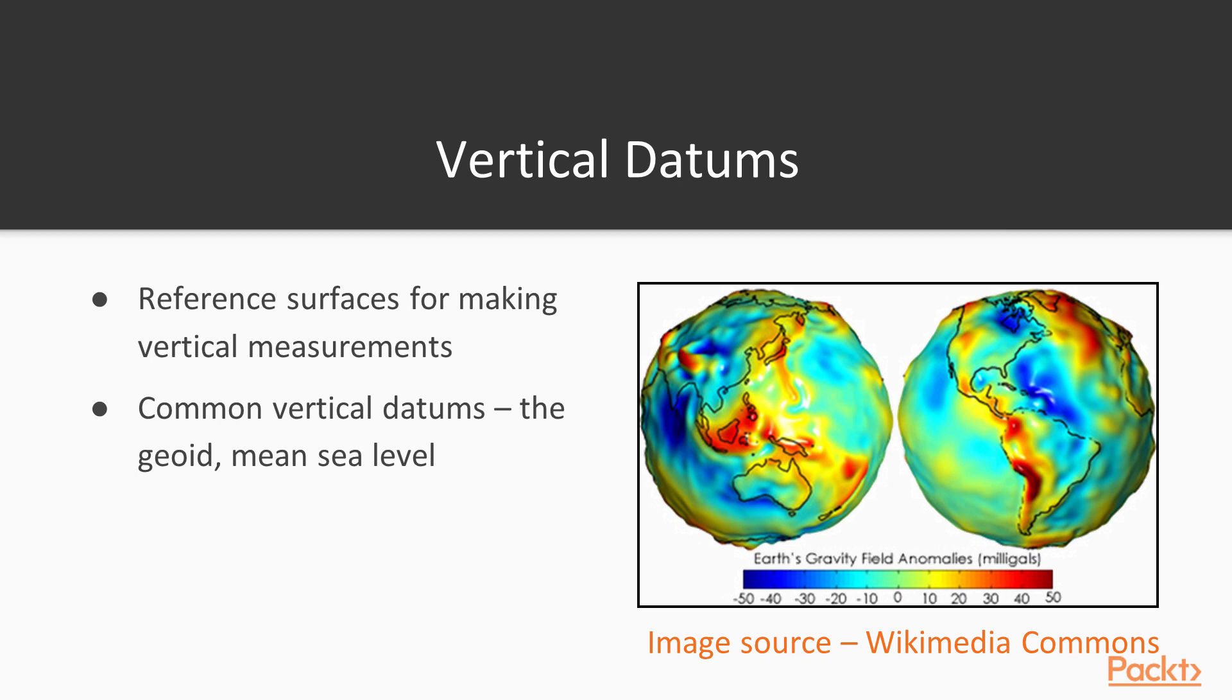A couple common vertical datums that we use include the geoid, which is represented in the image, which is the equipotential surface of the Earth. That is, the surface at which the pull of gravity is constant. We might also use mean sea level for making vertical measurements. In turn, this allows us to encode and then represent the topography of a landscape, which in turn facilitates 3D modeling.